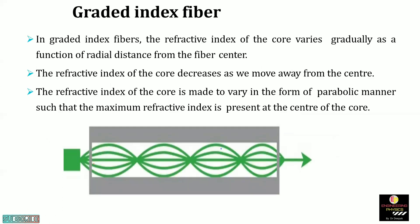Graded index optical fibre. As seen in the diagram, while moving from the center axis of the core to the core-cladding interface, the refractive index is decreasing. The refractive index at the center is highest, and as we move toward the core-cladding interface, the refractive index decreases. As a result, light travels in a parabolic manner through the graded index fibre.